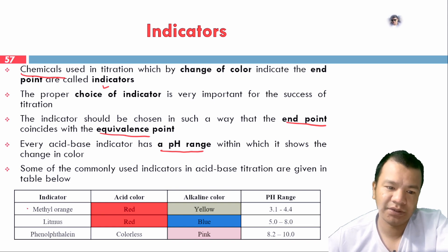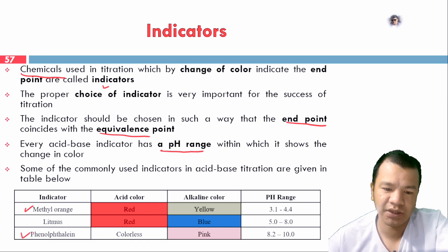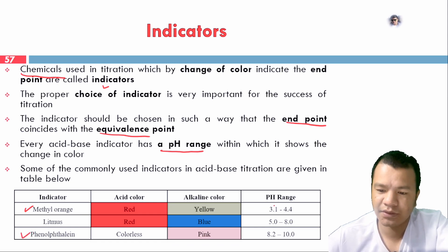We are using common indicators such as methyl orange or phenolphthalein. Methyl orange has a pH range of 3.1 to 4.4. Phenolphthalein has a pH range of 8.2 to 10.